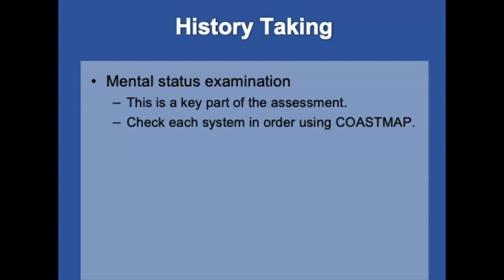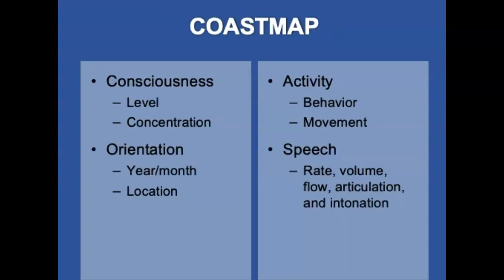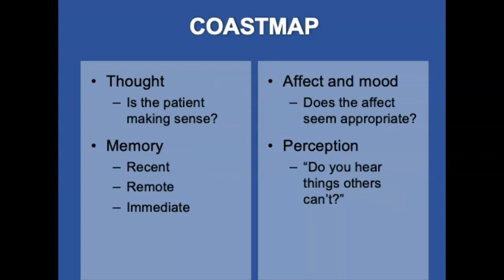The Mental Status Examination, or MSE, is part of the assessment for a patient experiencing an acute psychiatric emergency. Check each system of mental function using the mnemonic COSTMAP: C is consciousness, O is orientation, S is speech, T is thought, M is memory, A is affect, and P is perception. Determine the level of consciousness — whether alert, confused, responsive to pain. Ask orientation questions such as what year or month it is. Note activity such as restlessness, agitation, pacing, or repetitive movements.